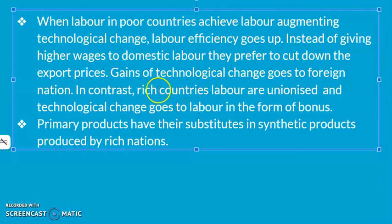In contrast, in rich countries, labor unions are strong, and whatever technological change occurs, the resulting profit goes to labor in the form of bonuses or productivity-linked increments. This means the gains are retained at home in the rich nations. So all five arguments work against poor nations.